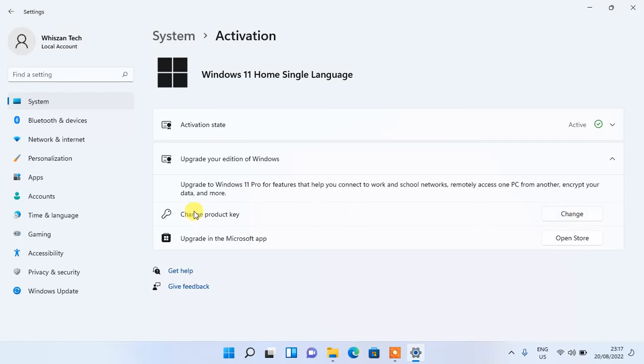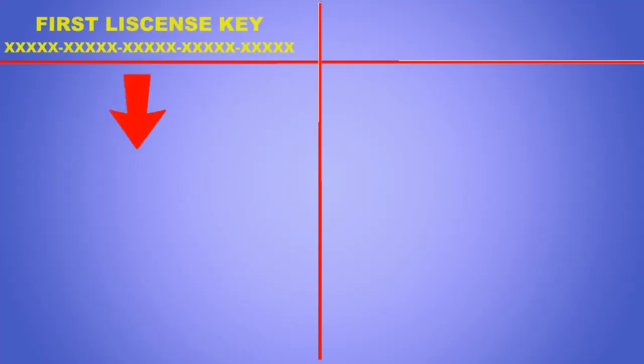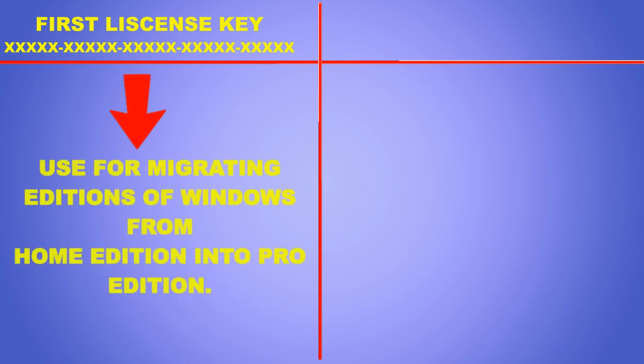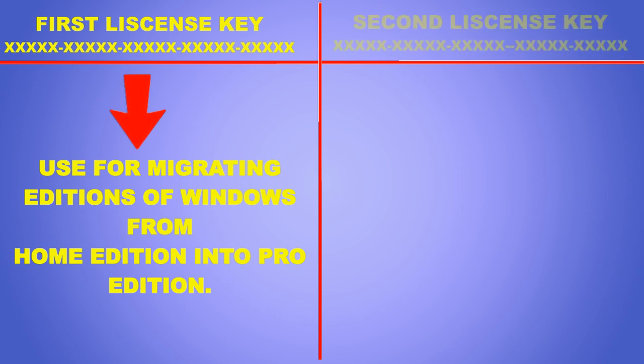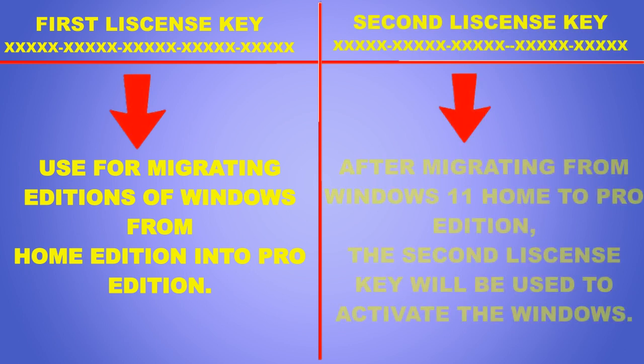Click on Change under the Change Product Key. To perform this upgrade, we need two license keys from Microsoft. The first key we are going to enter is a key that will migrate this edition of Windows from Windows 11 Home Edition into Windows 11 Professional. After migrating, we would further need to activate Windows 11 Professional — that is when the second key comes in. The second key can either be a Windows 11 Pro product key or a Windows 10 Pro product key.